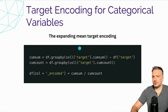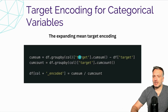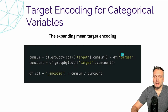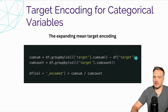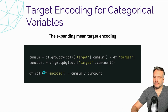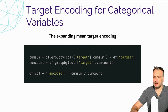It is easier to look at this in code. The idea is to compute the cumulative sum of the target per category of the column, and the cumulative count of the target per category of that column. We remove the value of the target for the specific row so we are not using it to compute the encoding. Then we divide the cumulative sum by the cumulative count — similar to computing an average. This simple approach is the Expanding Mean Target Encoding.